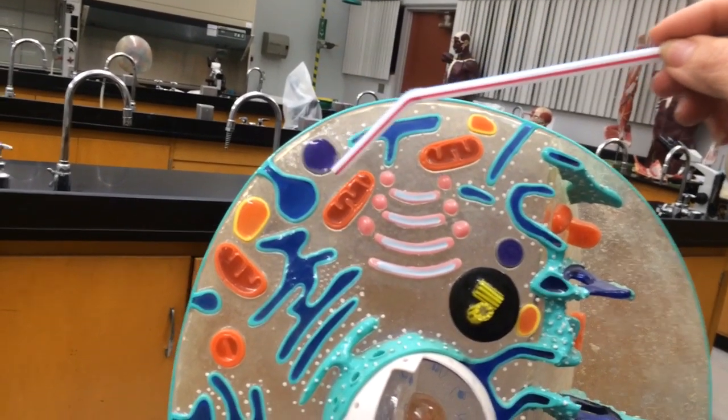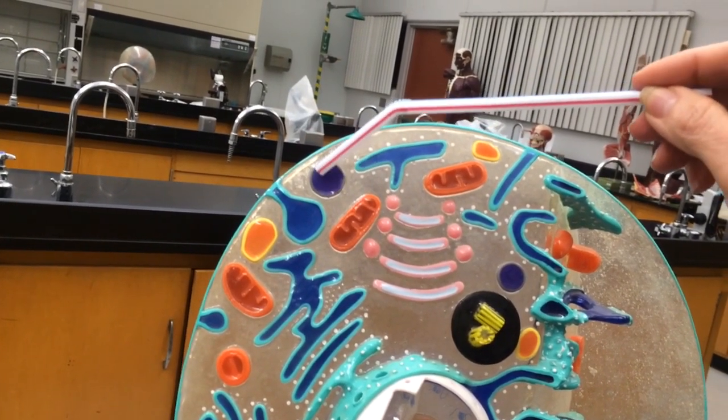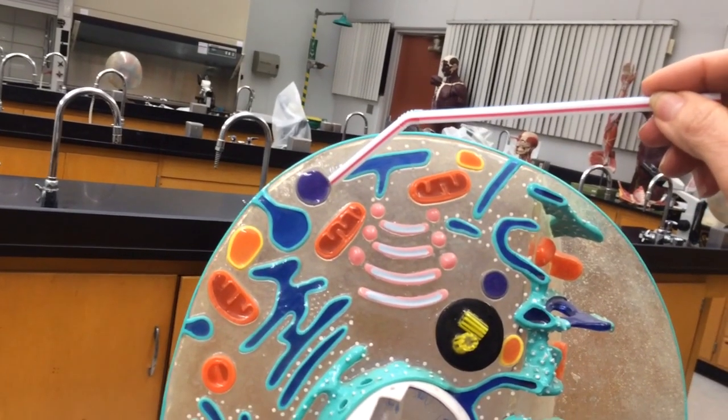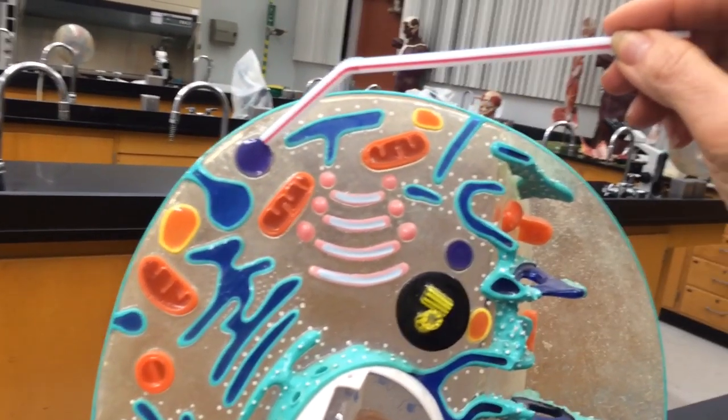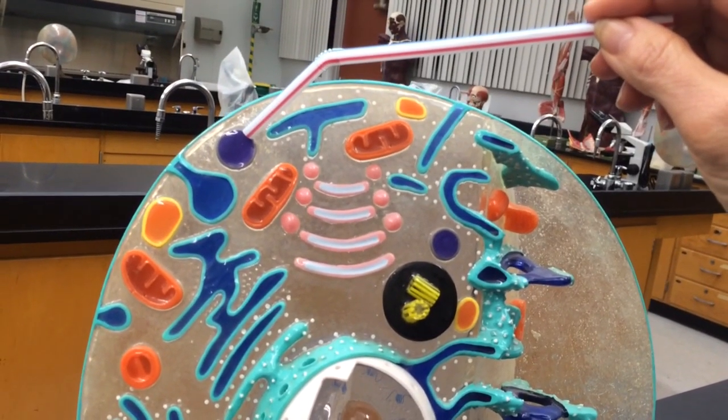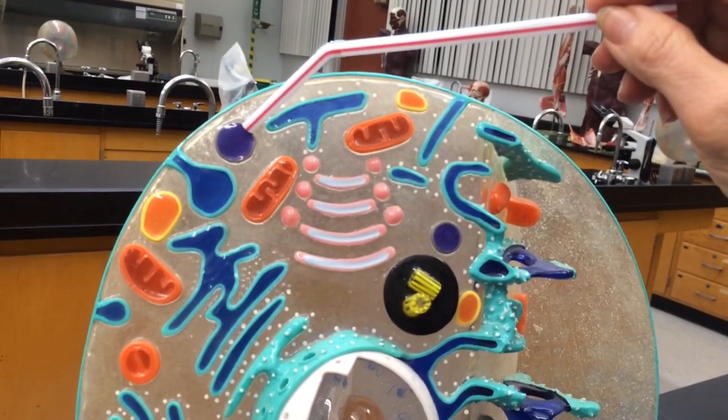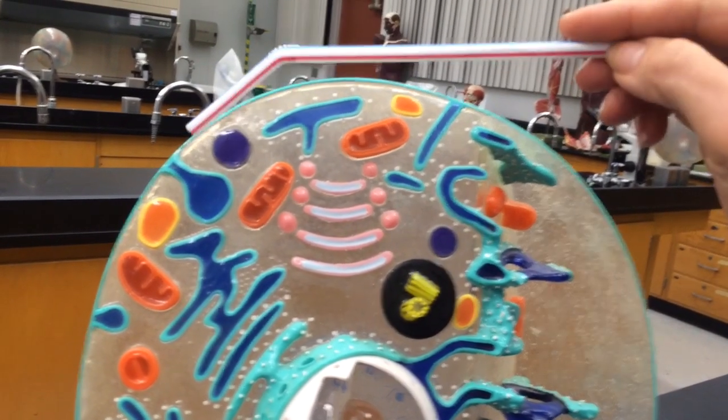This structure here is representing a lysosome. Remember, lysosomes' task is to break down old organelles. They carry hydrolytic enzymes, and hydrolytics just pertains to the enzymes basically being able to add water and breaking down whatever it is that they want to break down. They need to break down.